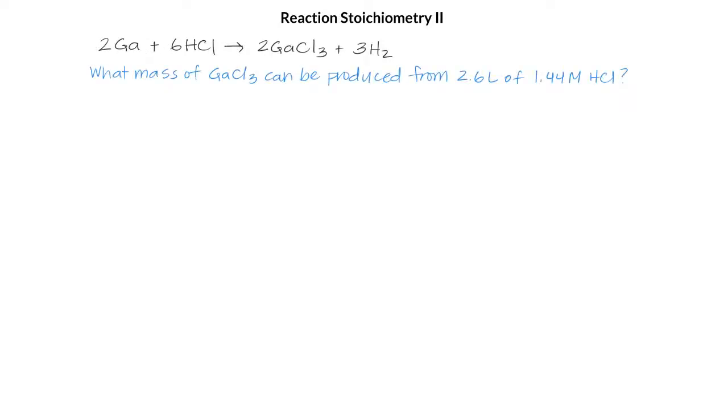Let's calculate the mass of gallium chloride that can be produced from 2.6 liters of 1.44 molar hydrochloric acid. Notice that we're not given grams, we're not given moles, but instead we're given units of molarity.